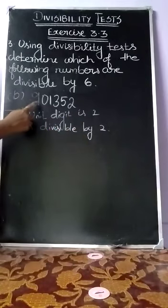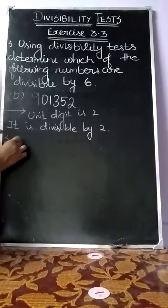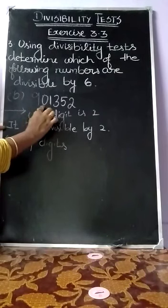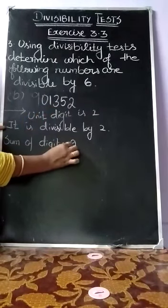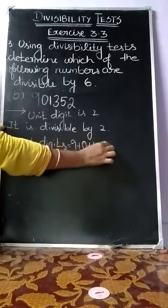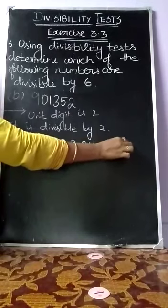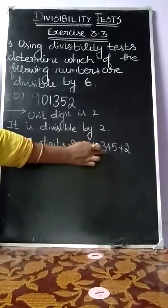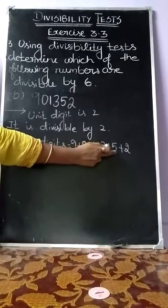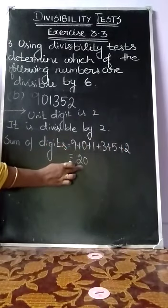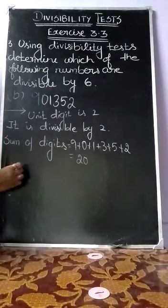Next, we check if the given value is divisible by 3 by calculating the sum of the digits. For 901352: 9+0+1+3+5+2. Adding: 9+0=9, 9+1=10, 10+3=13, 13+5=18, 18+2=20. The number 20 is not divisible by 3, so the given value is not divisible by 3.